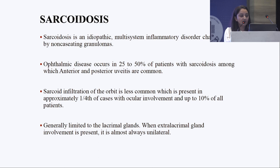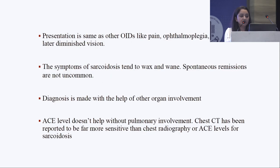Sarcoidosis is another cause of orbital inflammation — an idiopathic multisystem inflammatory disorder. Ophthalmic disease is seen in 25–50% of patients, including anterior and posterior uveitis. Sarcoid infiltration of the orbit is seen in only 25% of cases with ocular involvement and 10% of all sarcoidosis patients. Orbital involvement is generally limited to the lacrimal glands. ACE levels are useful for diagnosis but don't help if pulmonary involvement is absent; chest CT is a more sensitive investigation.